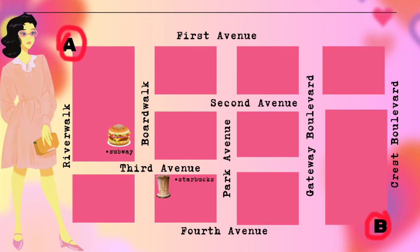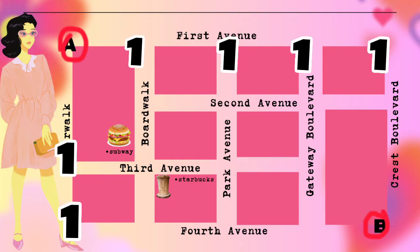First, every corner of the routes that we can see, we will label with the number one. After labeling every corner of the routes with number one, we will then propagate or 'blast' them to the succeeding numbers below. So the number ones on the upper side or upper part of the map will be propagated to the lower part.